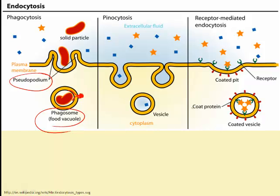This process is used by our liver cells, white blood cells, and amoeba. White blood cells use it to attack invaders and engulf bacteria, while the amoeba uses it to engulf a food particle.